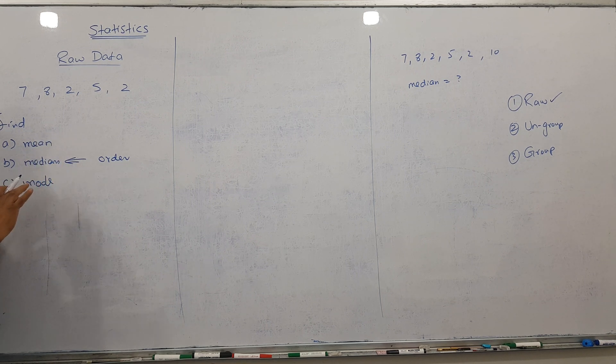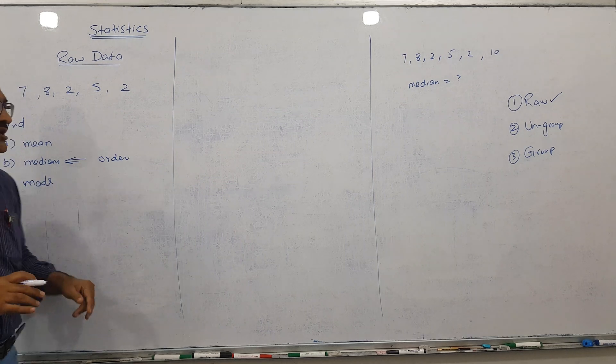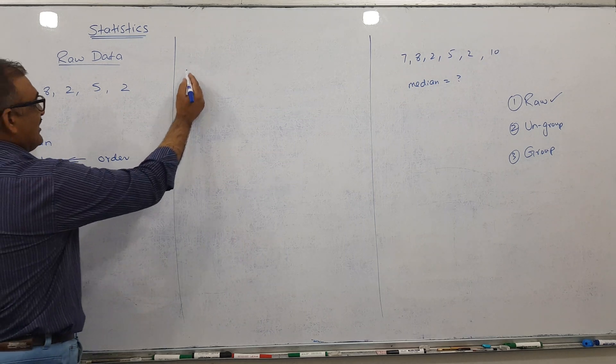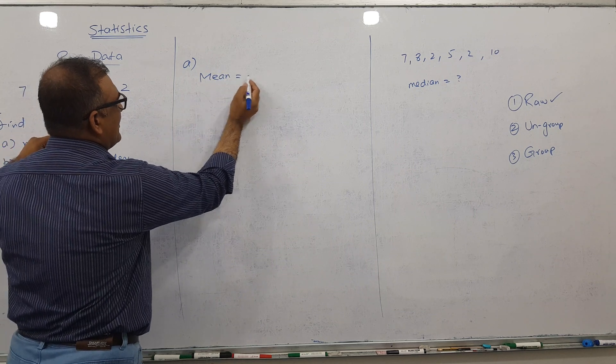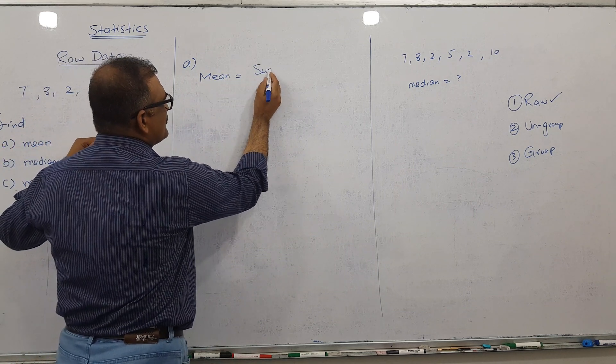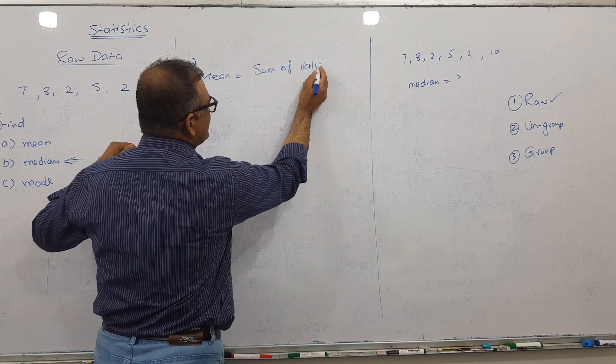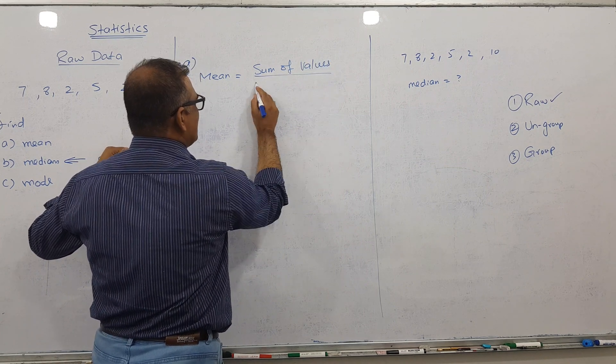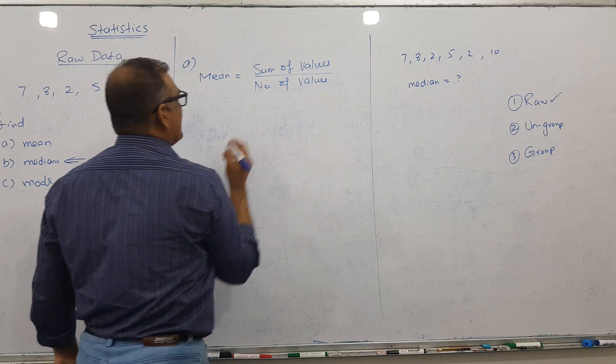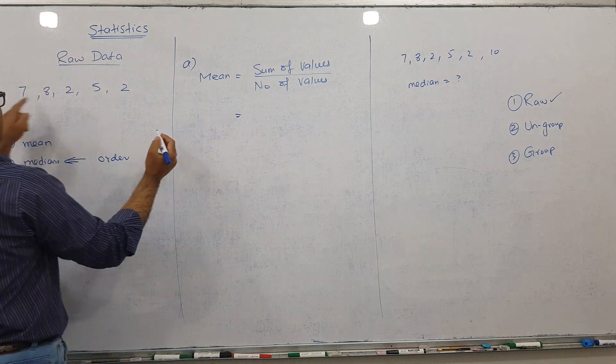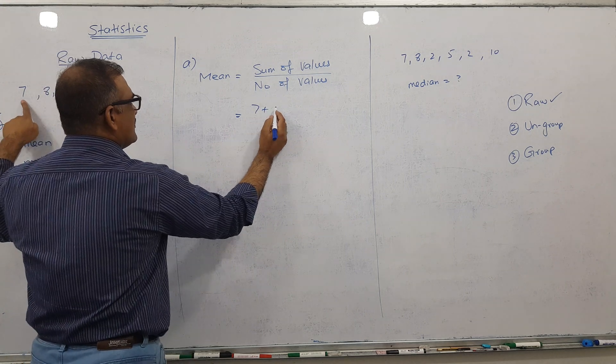For mode and mean, order is no problem. What is the formula for mean? Mean formula is given by sum of the values divided by the number of values. This is the basic formula we have.